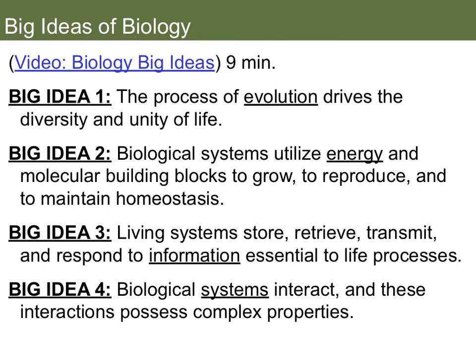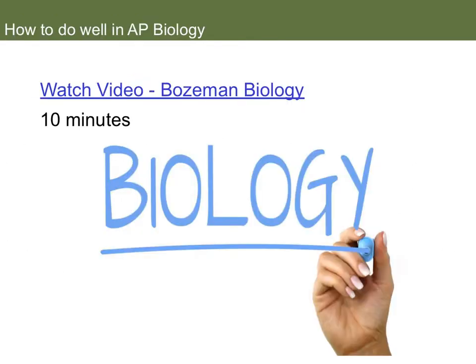Big idea one is about evolution and how that drives the diversity of life. Big idea two is about energy — how molecular building blocks are needed to grow, reproduce, and maintain homeostasis. Big idea three is about information — your DNA, how it gets retrieved, transmitted, and responds to different information molecules in the body. Big idea four is how biological systems interact. It is important to know how to study and do well for this course. There is a 10-minute link here to watch a video on how to be successful in AP Biology, so please watch that.